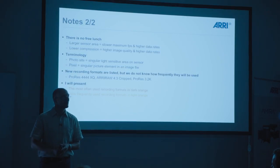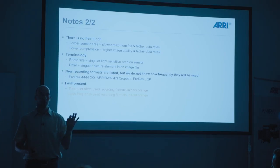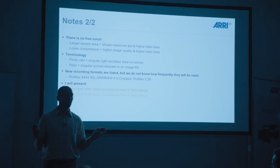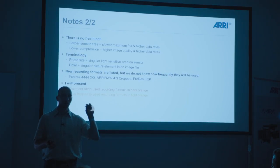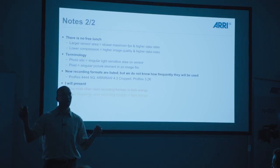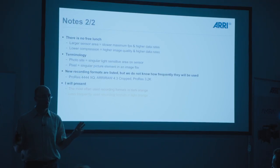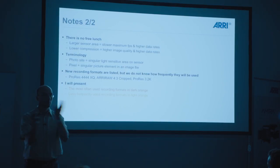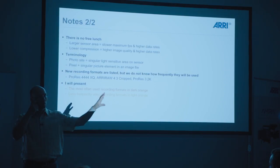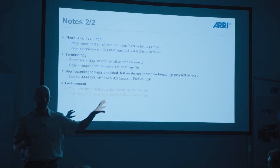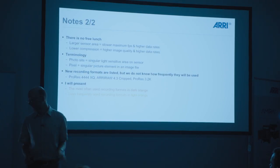On terminology: I like to distinguish between photosites and pixels. A photosite is a light-sensitive area on the sensor, and a pixel is a picture element that a file consists of. A lot of the confusion in the industry comes from people confusing those two — there's a difference between the actual light-sensitive areas on the sensor and how many pixels you actually record in your file.